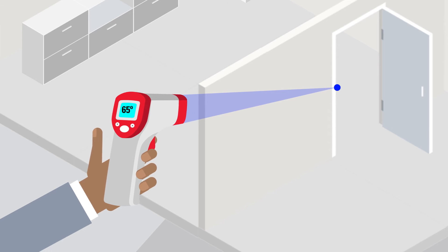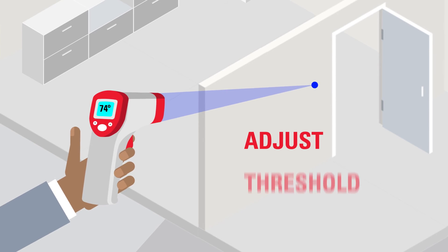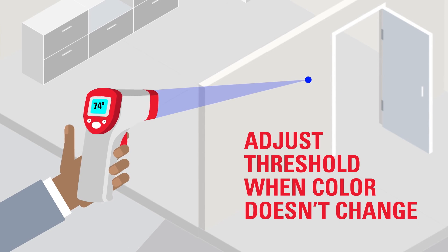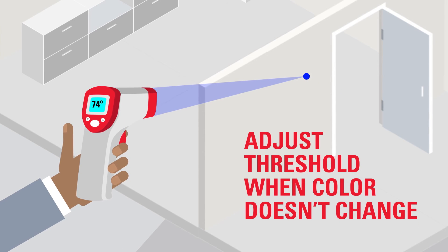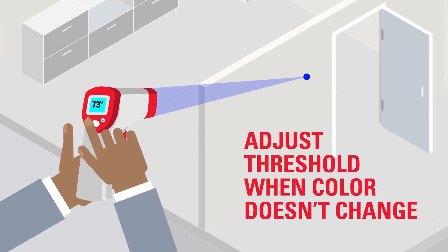If you find the temperature is changing on the screen but the light color is not changing, try decreasing your threshold setting.